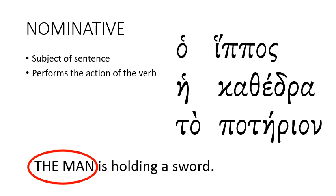The marker for the nominative case in the masculine gender is 'o', with the ending '-os'. The feminine ending is '-a', and the neuter marker is 'to' with the ending '-on'. So examples are: 'o ipos' (masculine), 'a cathedra' (feminine), 'to poterion' (neuter).